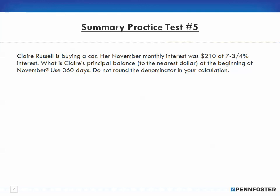Number 5: Claire Russell is buying a car. Her November monthly interest was $210, so my interest is $210, at 7.75% interest. What is Claire's principal balance? We're going to have to find the principal to the nearest dollar at the beginning of November, and we're using 360 days. Do not round the denominator in your calculation.